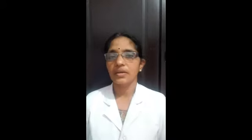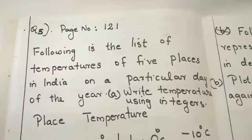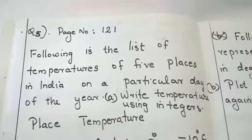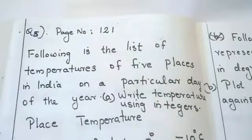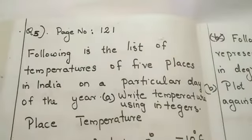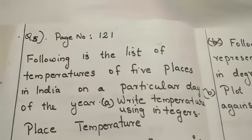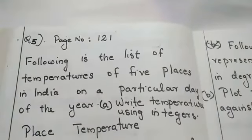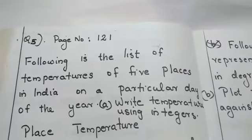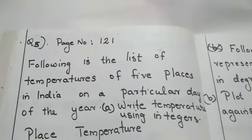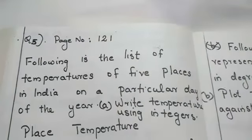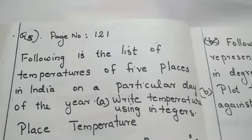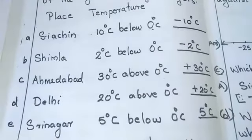Use the number line to solve it and you observe the temperatures of 5 places in India on a particular day. Children, we can do one problem. Following is the list of temperatures of 5 places in India on a particular day. Write temperature using integers. Integers means using negative and positive numbers. First one.